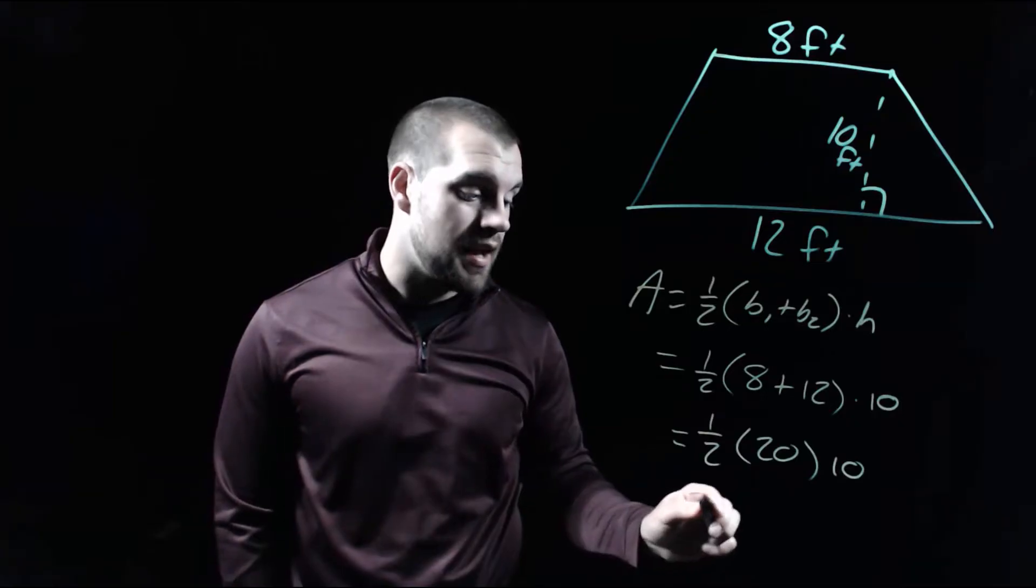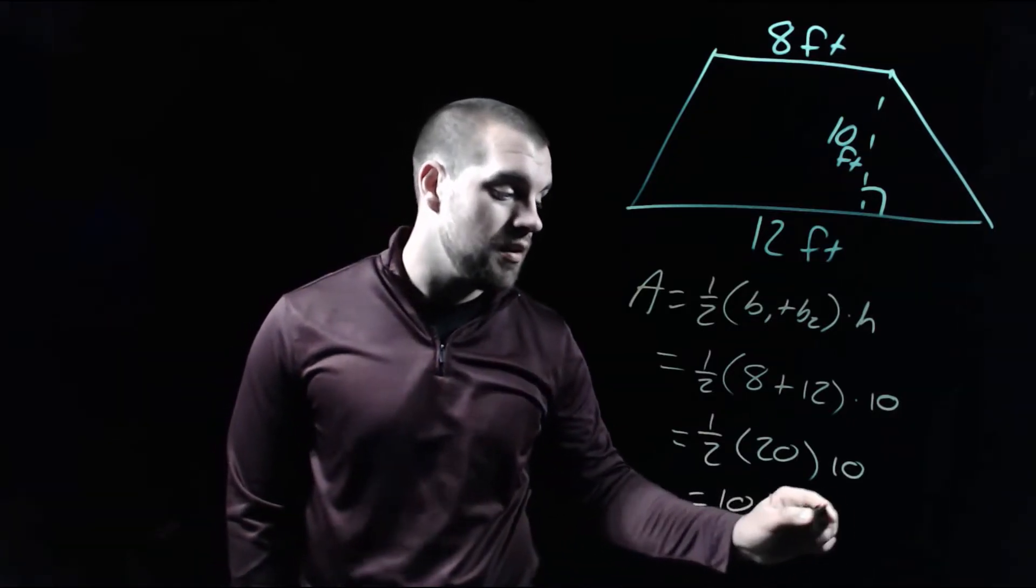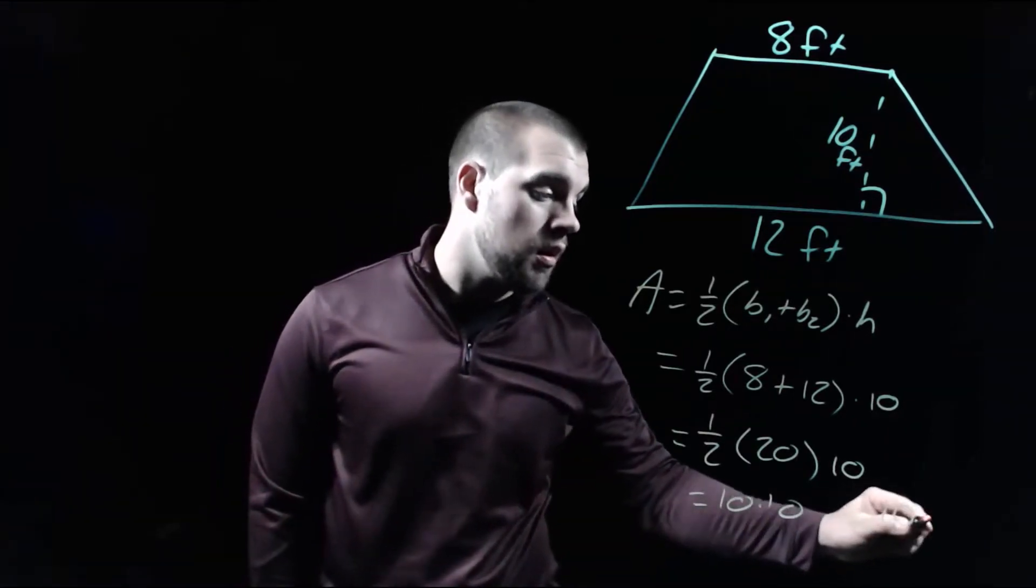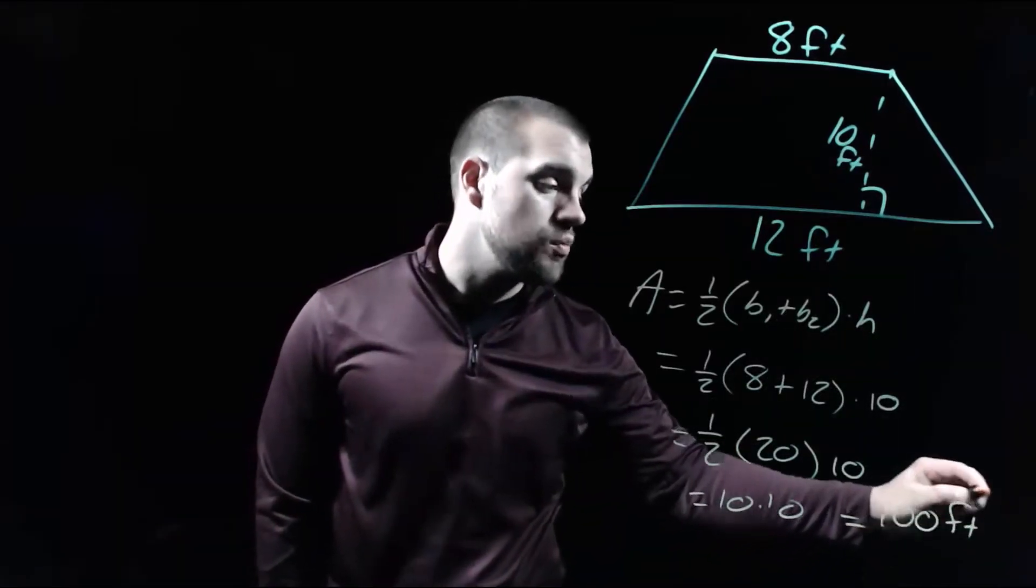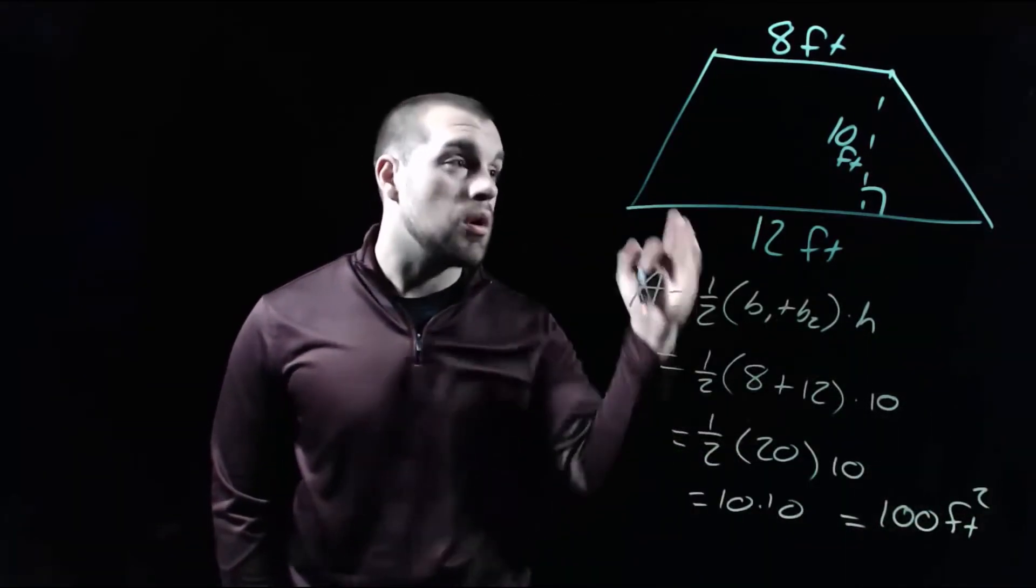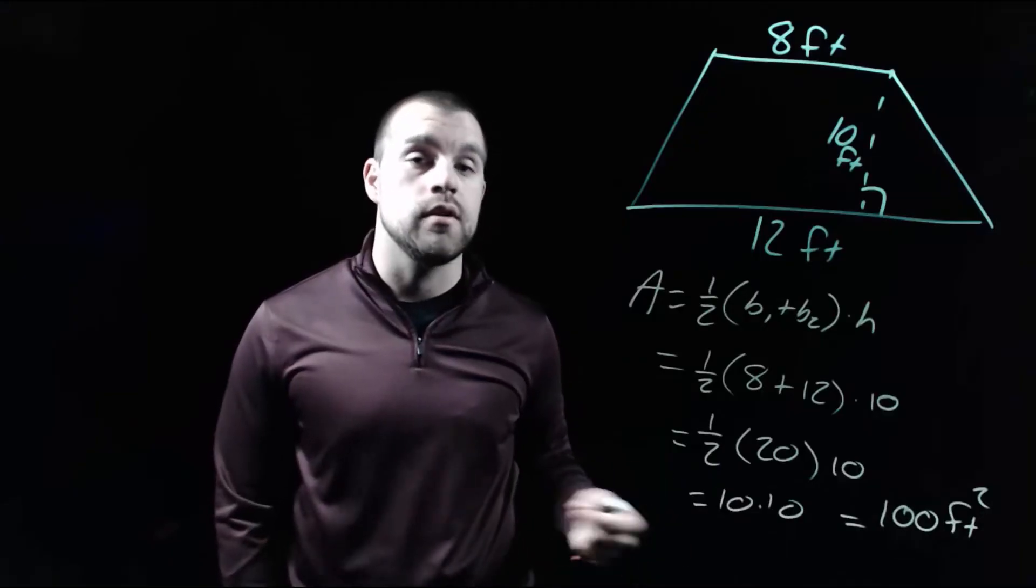Well, half of 20 is 10. So we have 10 times 10, which gives us an area of 100 feet squared, since we need to throw a label on the end. So our trapezoid has an area of 100 feet squared.